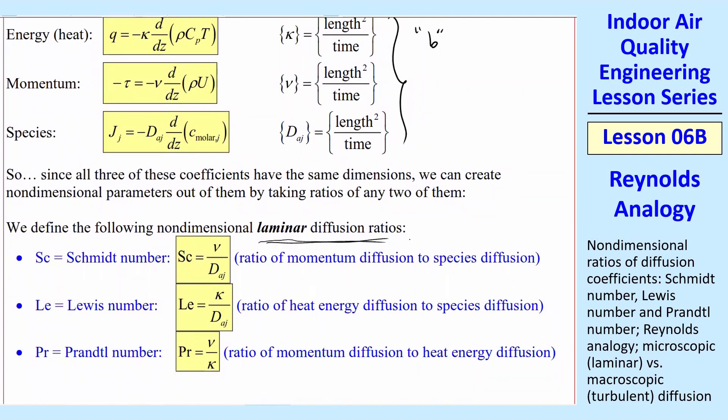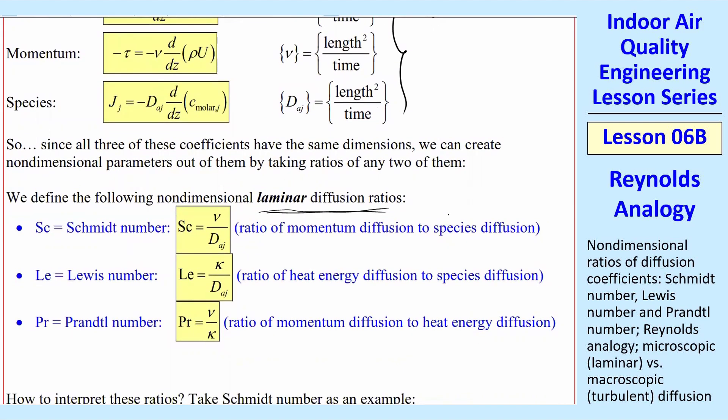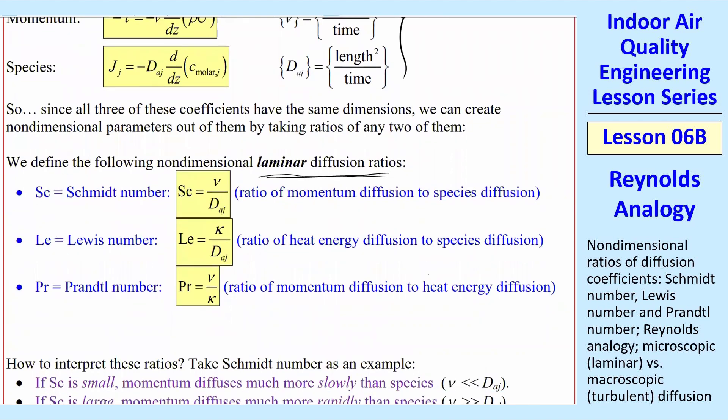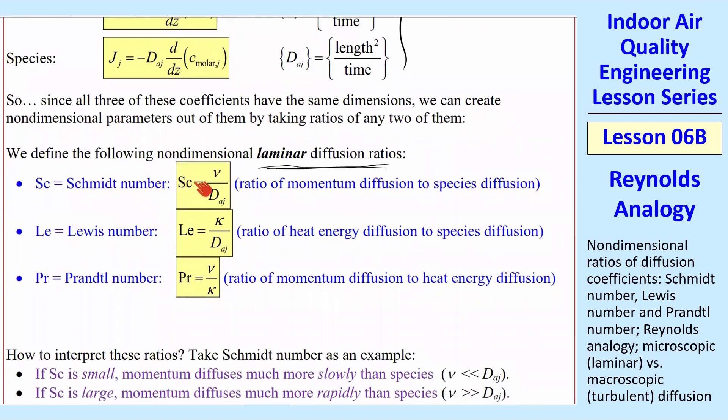So these are for the laminar case. We'll talk about turbulence later in this lesson. Schmidt number is defined as nu over dAj, the ratio of momentum diffusion to species diffusion. Lewis number is kappa over dAj, heat energy diffusion over species diffusion. And finally, Prandtl number, which you're probably already familiar with from your heat transfer class, is nu over kappa, ratio of momentum diffusion to heat energy diffusion.